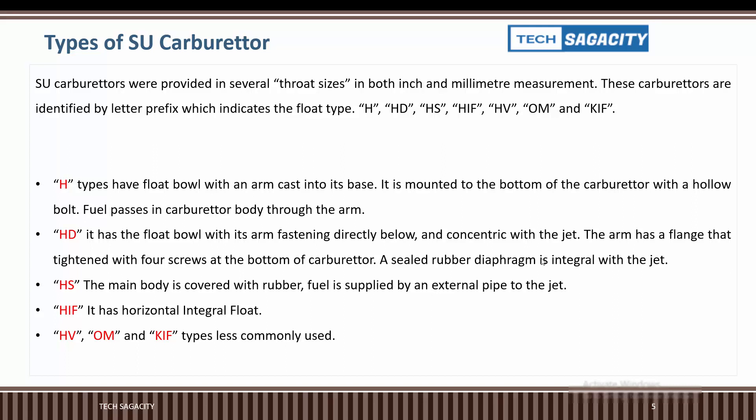The HS type: the main body is covered with rubber. Fuel is supplied by an external pipe to the jet. The complete body is covered with a rubber jacket, and the core is metal.